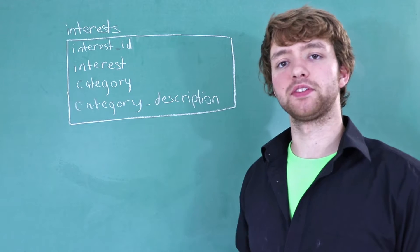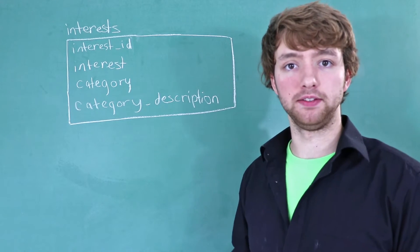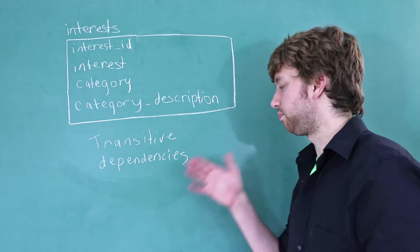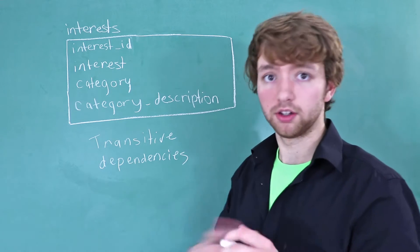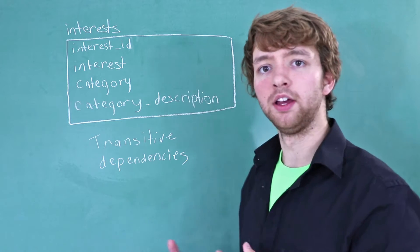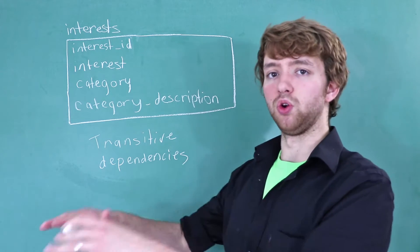Third normal form deals with something called transitive dependencies. Essentially, what a transitive dependency is, is when a column depends on the primary key, as it should in normal database design, but it does so through another column.